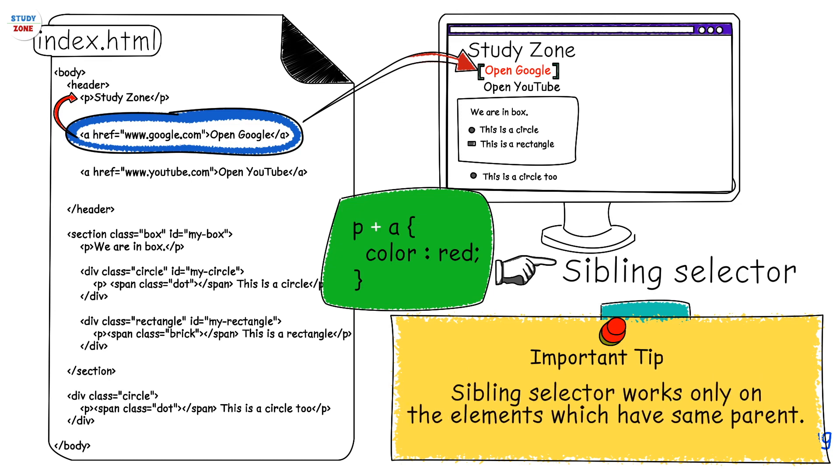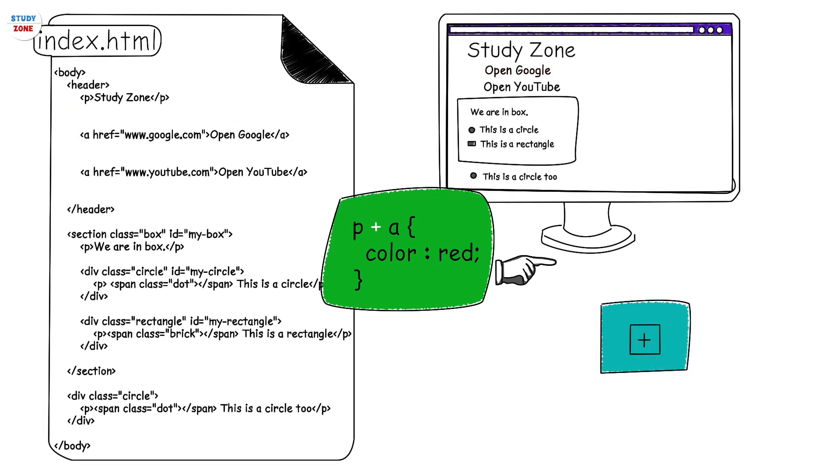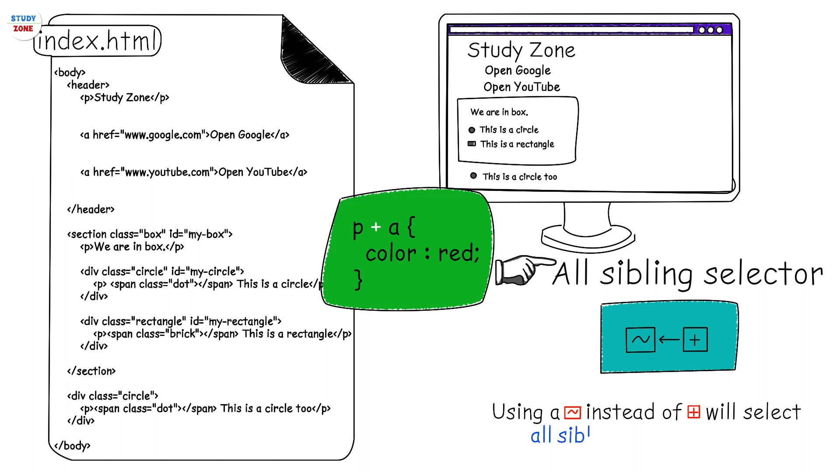All sibling selector: using a tilde instead of plus will select all siblings of an element. Using the same example and replacing plus with the tilde will select both the anchor tags and will change the text color of both elements to red.